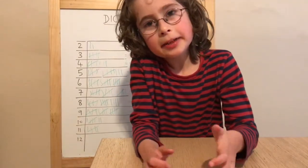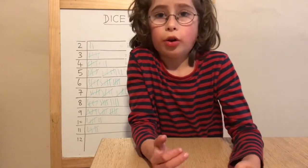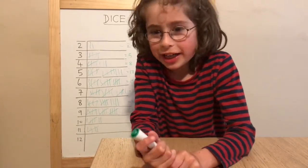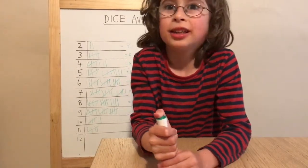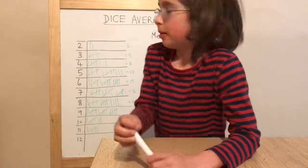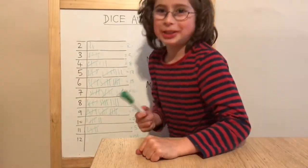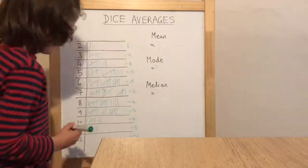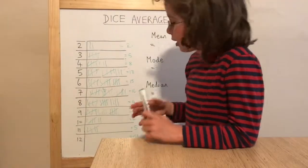The median means the middle one of all the results. You're gonna wait here while I count 50 tally marks. That's the 50th one — that's the 50th one where I do my little mark.